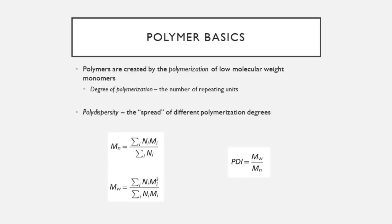We describe molecular weight by using the average molecular weight. Whenever we talk about an average, we have to consider the frame of reference. Polymer scientists use two approaches: the number average molecular weight and the weight average molecular weight. The number average is more similar to the typical mean we've used since grade school. The weight average molecular weight is calculated using the square of the molecular weight in the numerator, so it's always more biased toward the larger molecules.